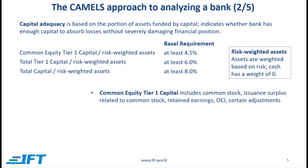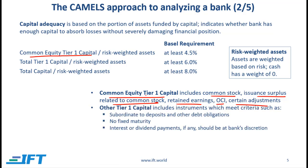Common equity tier one capital includes common stock, issuance surplus related to common stock, retained earnings, OCI, and certain adjustments — essentially what we generally call common equity. Other tier one capital includes instruments that are subordinate to deposits and other debt obligations, have no fixed maturity, and where interest or dividend payments are at the bank's discretion. An example would be preferred stock where dividend payments depend on the bank's discretion.